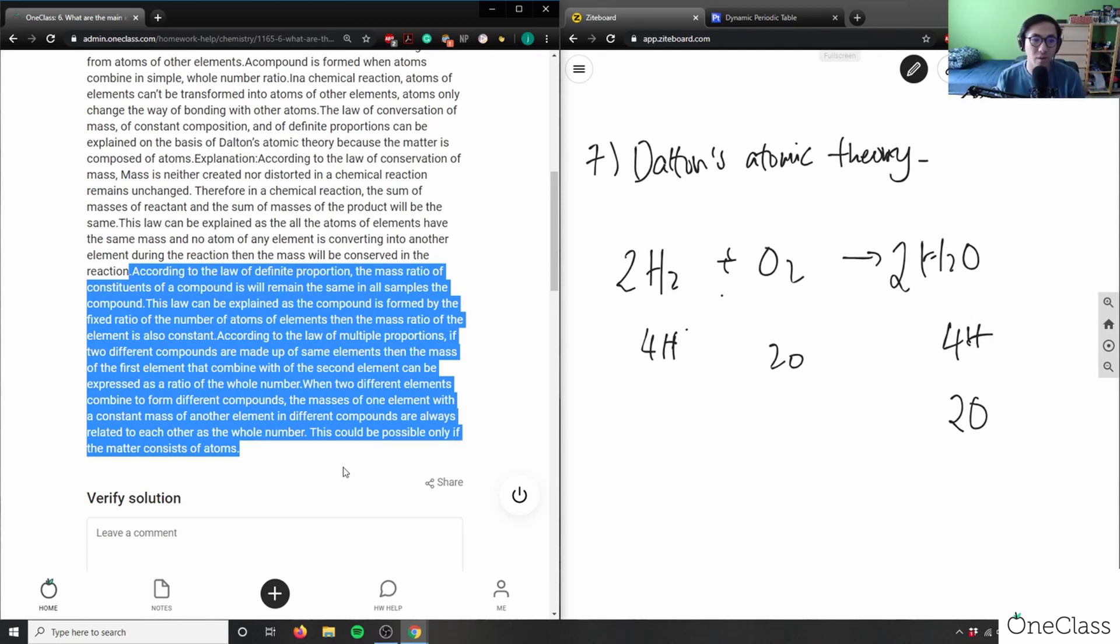If I have a sample of water, one molecule of water has a mass ratio that's constant, it's always two hydrogens with one oxygen. That's the law of definite proportions, that's good.